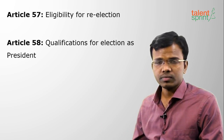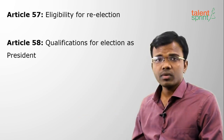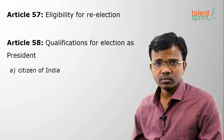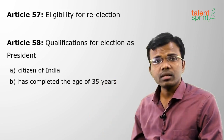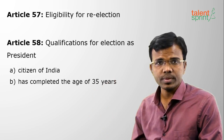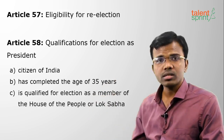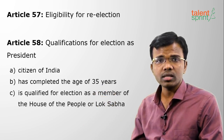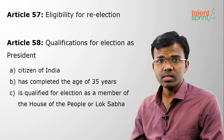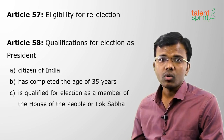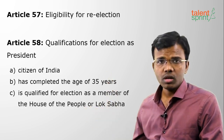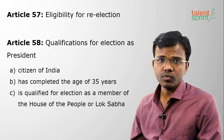Article 58 covers qualifications for election as President. First, the person must be a citizen of India. Second, he must have completed 35 years of age — that is the minimum age. Third, he must be eligible to contest as a member of Lok Sabha only, not Rajya Sabha. These are the three qualification conditions.